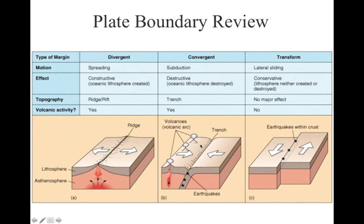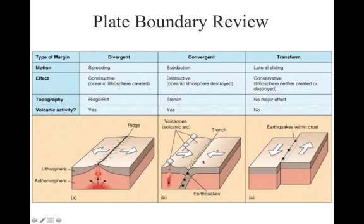The last one is convergent. We get a subduction motion because they're crashing into each other. It is destructive because the lithosphere is being destroyed. We almost always get a trench and often volcanoes, and this plate boundary can also cause earthquakes. This was the case in the most recent earthquake off Japan's coast that caused that huge tsunami — that was actually a convergent plate boundary.